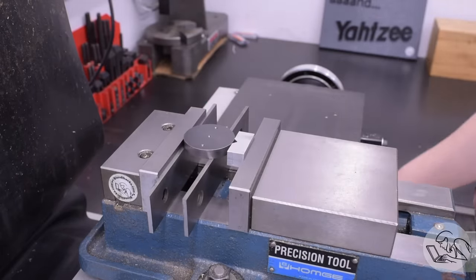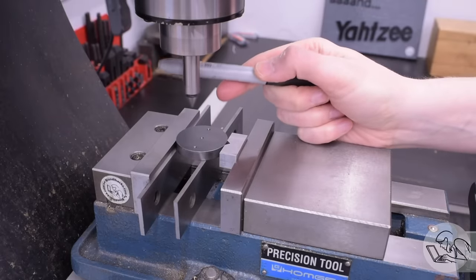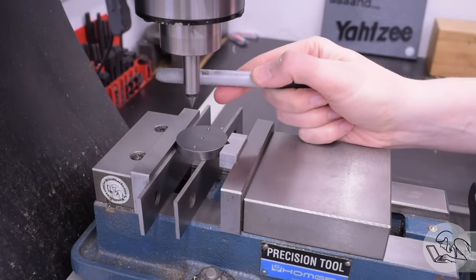You can see I'm also holding the piece with a small shopmate v-block there, because you never want to hold a round part with only two points of contact. You always want three.